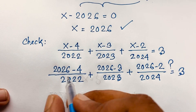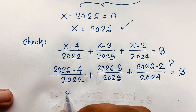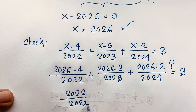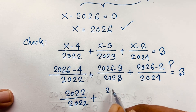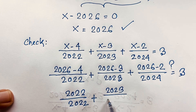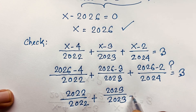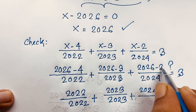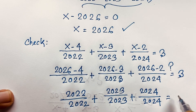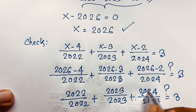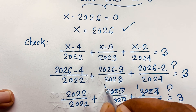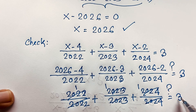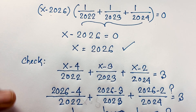This simplifies to 2022 over 2022 plus 2023 over 2023 plus 2024 over 2024, which equals 1 plus 1 plus 1, which equals 3. The left-hand side equals the right-hand side, so our answer is verified.